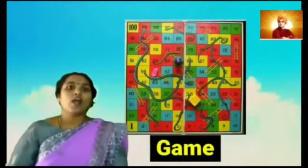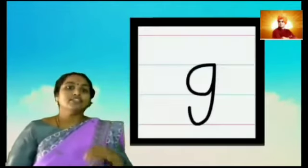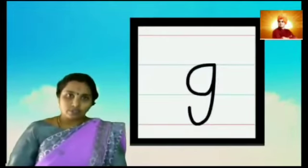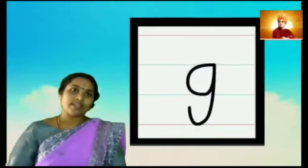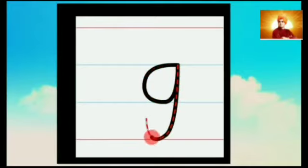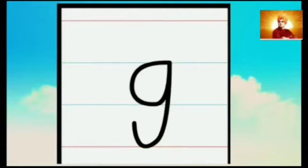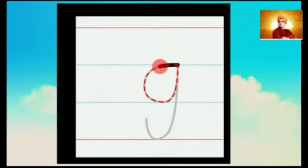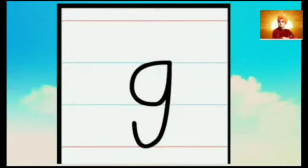Now we are going to learn how to write letter G, small g, using strokes in a four line. G — make an open curve, go up, come down, make a small turn. G.